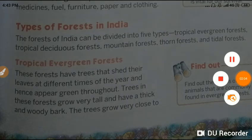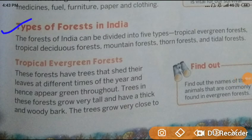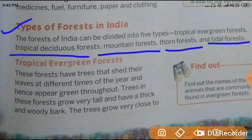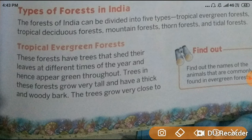The forests of India can be divided into five types: first is tropical evergreen forest, second is tropical deciduous forest, third is mountain forest, fourth is thorn forest, and fifth is tidal forest.